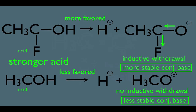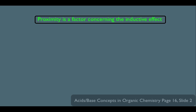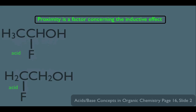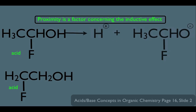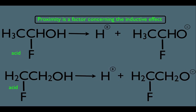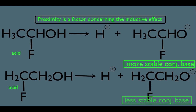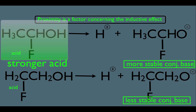There are a few nuances concerning this rule. The first nuance is that proximity is a factor concerning the inductive effect. Comparing two acids, the top conjugate base has the F in closer proximity to the oxygen than the bottom conjugate base, where F is further away. The inductive effect is a local effect, so the closer the F is to the oxygen, the stronger the inductive effect. Therefore, the top conjugate base is more stable and the top acid is the stronger acid.